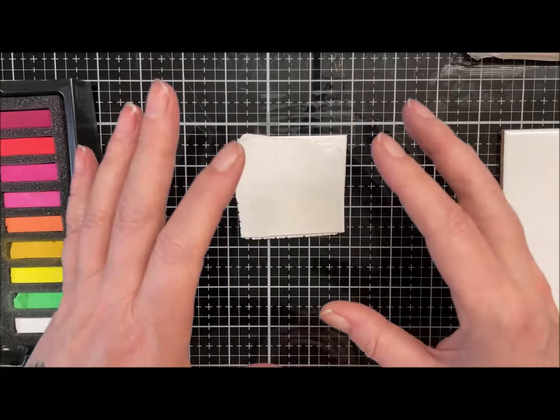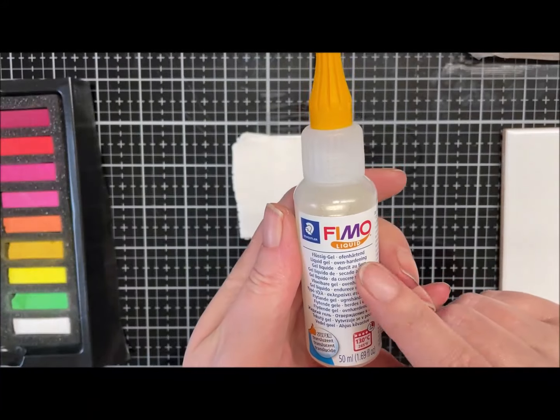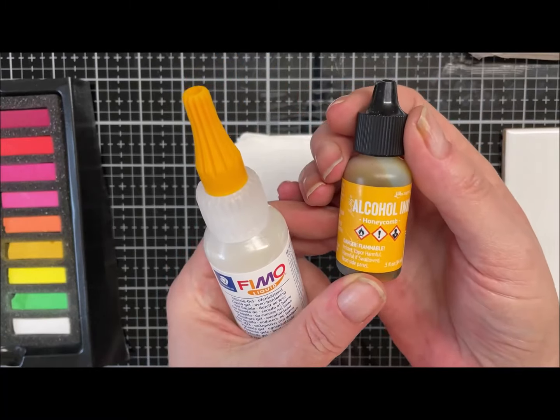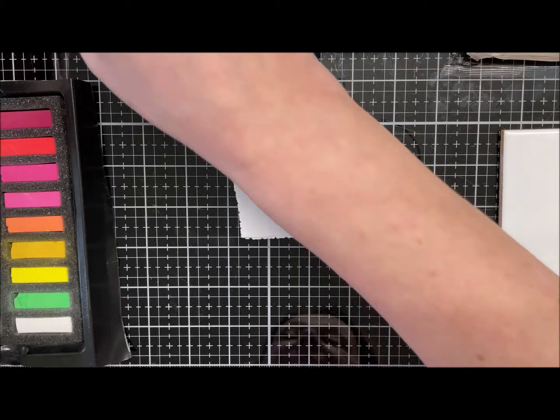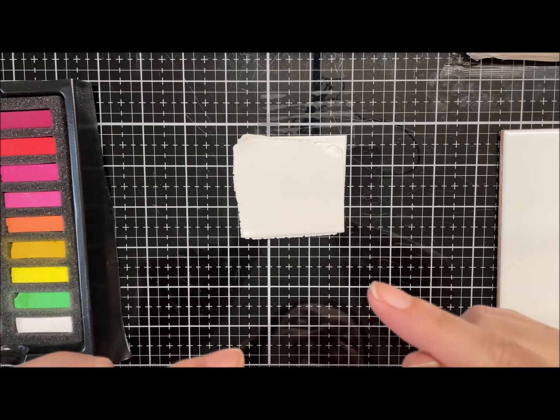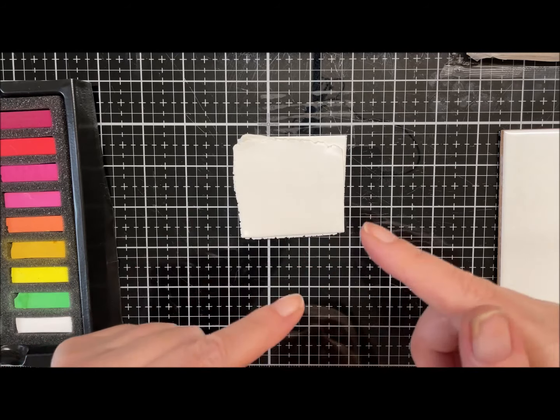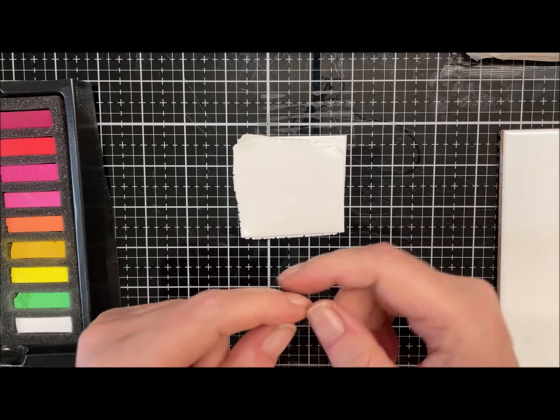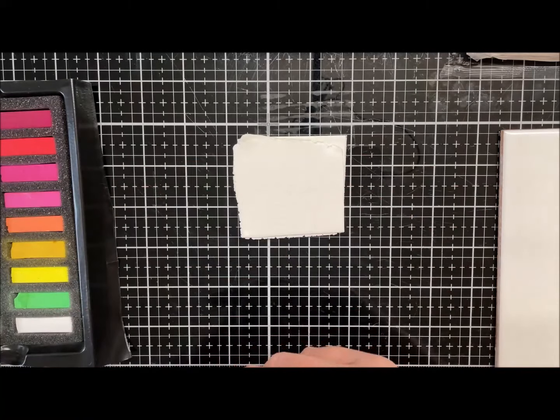We're also going to use some Fimo liquid gel, and I'm going to use honeycomb alcohol inks to tint my gel. You could tint some resin at the end or a bit of your varnish, just tint it with a bit of alcohol ink and you'll probably get around the same effect as well.